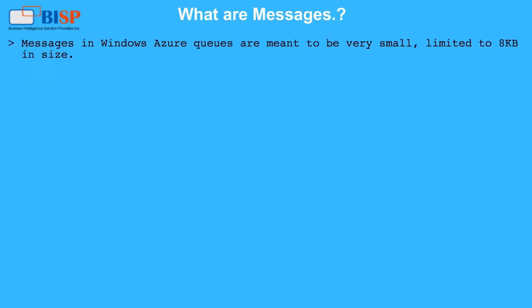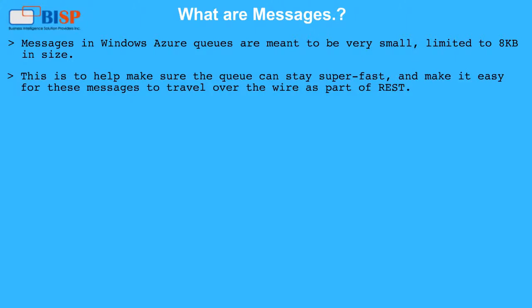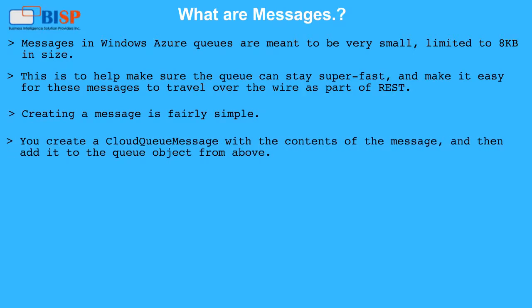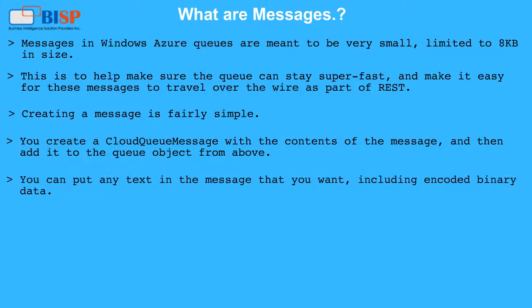What are messages? Messages in Windows Azure Queues are meant to be very small, limited to 8 KB in size. This helps make sure the queue can stay super fast and makes it easy for these messages to travel over the wire as part of REST. Creating a message is fairly simple — you create a cloud queue message with the contents of the message and then add it to the queue object. You can put any text in the message that you want, including encoded binary data.